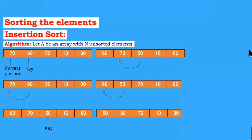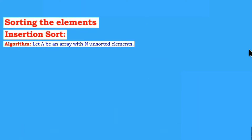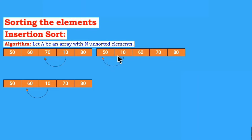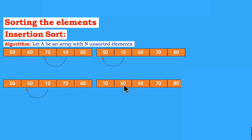Now the key element is 10. Next, 10 will be compared with 70, 60, and 50. Here 10 is less than 70, so interchange takes place. Again 10 is compared with 60, interchange takes place. Now 10 is compared with 50 and since 10 is less than 50, interchange takes place. The array is now: 10, 50, 60, 70, and 80.